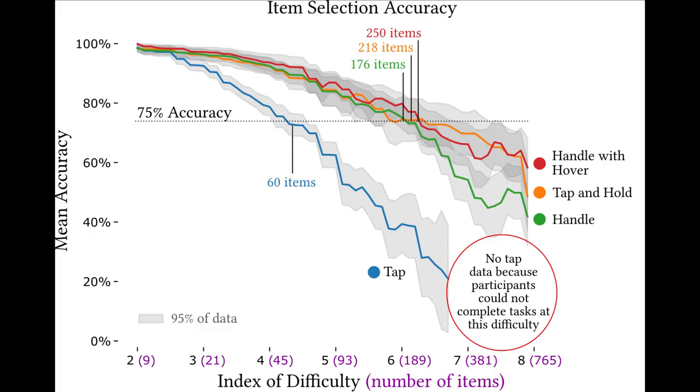Here are the results. For all techniques, as more items were displayed to participants, their accuracy dropped. The main finding is that the accuracy dropped much more dramatically for tap selection than for any of the feedback-providing techniques.